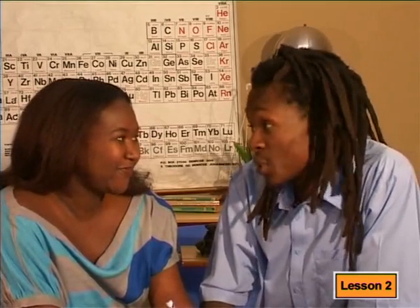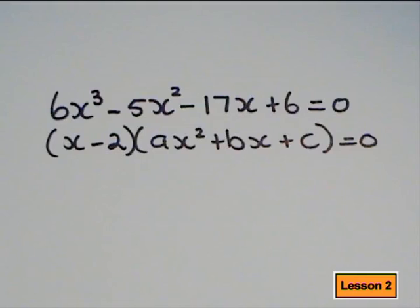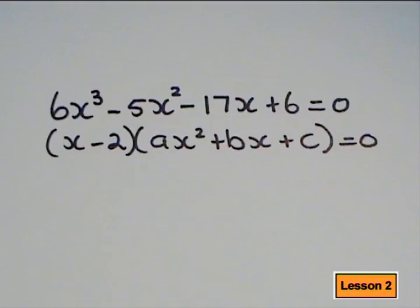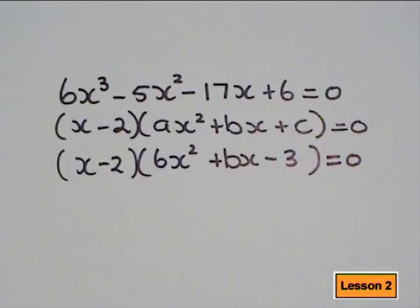Good. What's the next step? Next, we need to find the other factors. We know that a cubic function is a binomial multiplied by a trinomial. We already have a binomial factor, so we need to find the trinomial factor. We know that one of the factors is x minus 2. In order to get a cubic function, we would need to multiply that by a trinomial, which we can write as ax squared plus bx plus c. Which means that to find the other factors, I need to find the values of a, b, and c in the trinomial. I'll start with a first: x times 6x squared gives me 6x cubed, so a is 6. Minus 2 times minus 3 gives me 6, so c must be minus 3.